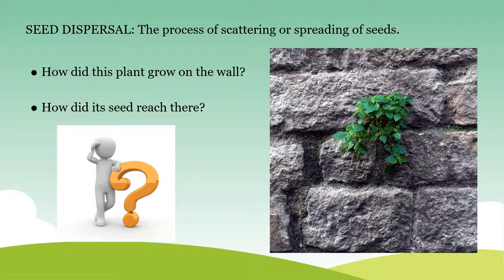Seed dispersal is the process of scattering or spreading of seeds away from the parent plant. We find different kinds of plants growing in our surroundings. How did those plants grow there? Maybe someone planted them there. But what about trees growing in forests? We sometimes see trees growing on cracked walls of old buildings. How did they reach there? Let us try to get those doubts clarified in this video.